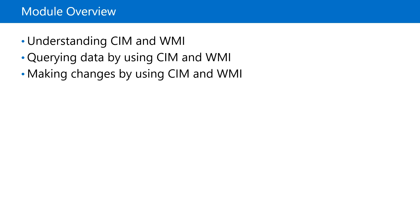There will be a lab session also in this lesson that we will see in a separate video. WMI stands for Windows Management Instrumentation and CIM stands for Common Information Model. Both provide local and remote access to a repository of management information, which we can use to query robust information from the operating system, computer hardware, and all installed software.